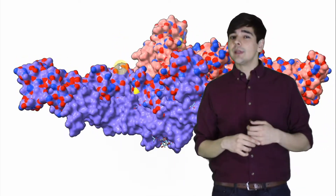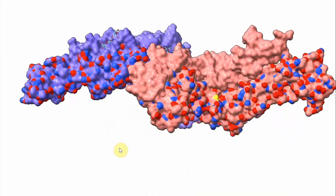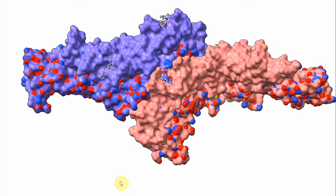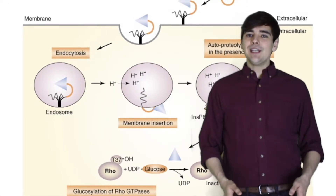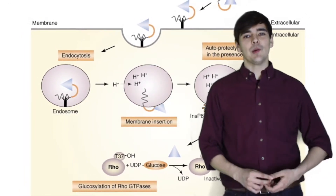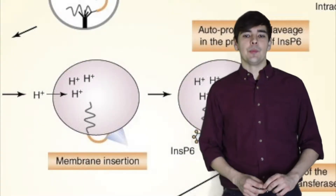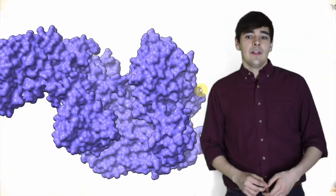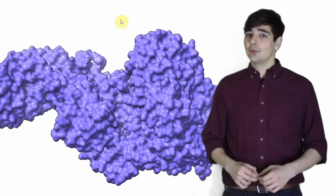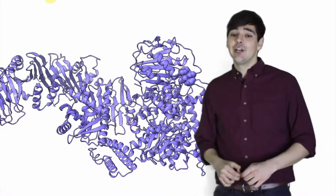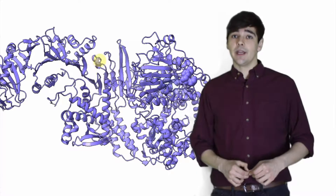Binding induces conformational changes in receptor molecules that initiates endocytosis. Step 2: Delivery into the cell. TcdA is imported into the cytosol contained in a porous endosome. Free hydrogen protons diffuse into the endosome, lowering the pH. The hydrophobic core of the protein becomes protonated, which exposes non-polar residues. This conformational change anchors the toxin within the endosome while simultaneously exposing the active site of the cutting region.